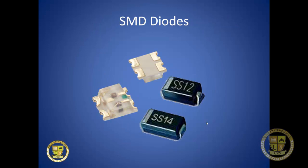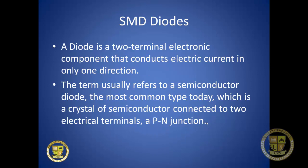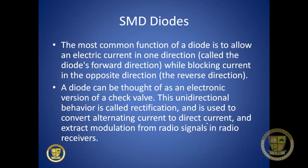SMD diodes come in a few different style packages. A diode is a two-terminal electronic component that conducts electric current in only one direction. It's a crystal of semiconductor connected to two electrical terminals, known as a PN junction. The most common function is to allow current in only one direction — the forward direction — while blocking it in the reverse direction. A diode can be thought of as an electronic check valve. This unidirectional behavior, called rectification, is used to convert AC to DC and extract modulation from radio signals.